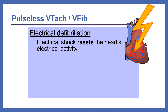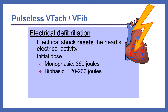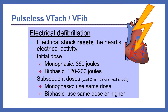Electrical defibrillation is a shock that resets the heart's electrical activity. It can either be given as monophasic or biphasic defibrillation, with an initial dose of 360 joules for monophasic and 120 to 200 joules for biphasic. Subsequent doses for monophasic use the same dose, whereas for biphasic you would use either the same dose or a higher dose.